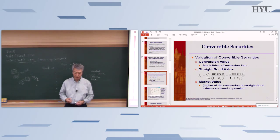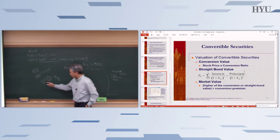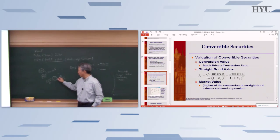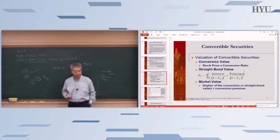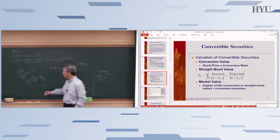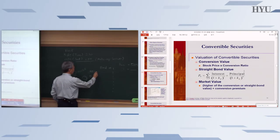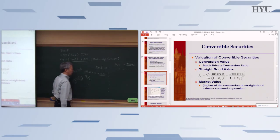The conversion value is simply the stock price times the conversion ratio. In this example, the conversion ratio is 25. When the time comes to convert, if the market price of the stock is $50, then conversion value is 50 times 25, which equals $1,250. So conversion value equals market price of shares times conversion ratio.